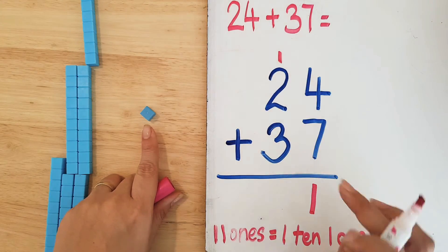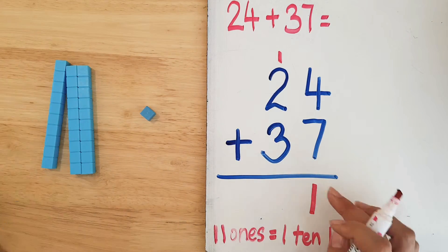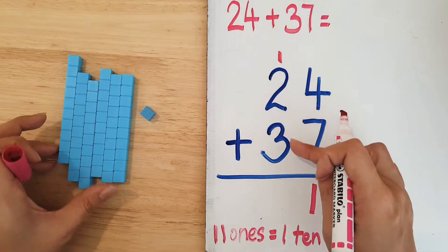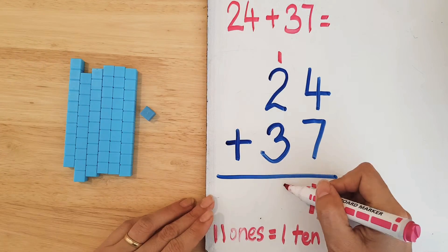And now we are going to add the tens. One ten plus two tens plus three tens are six tens.